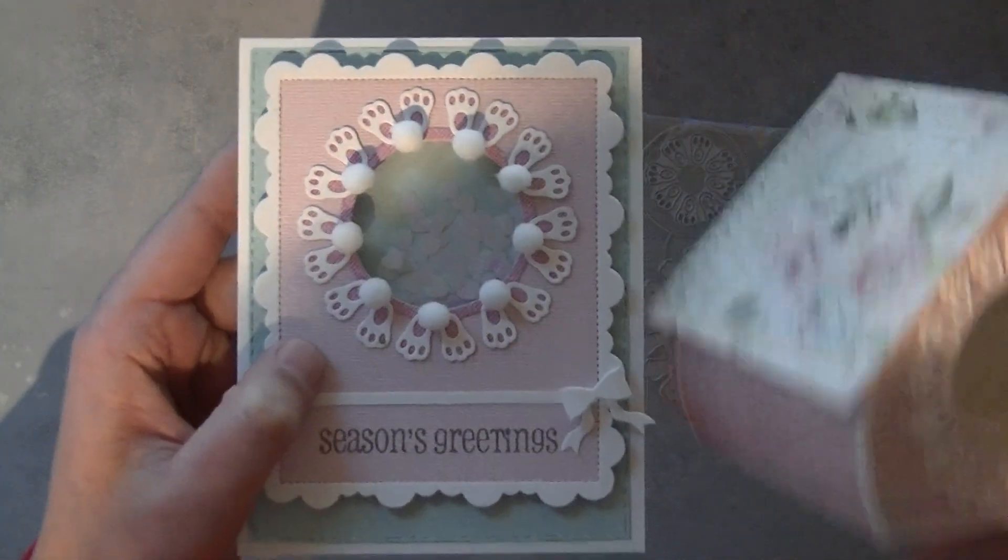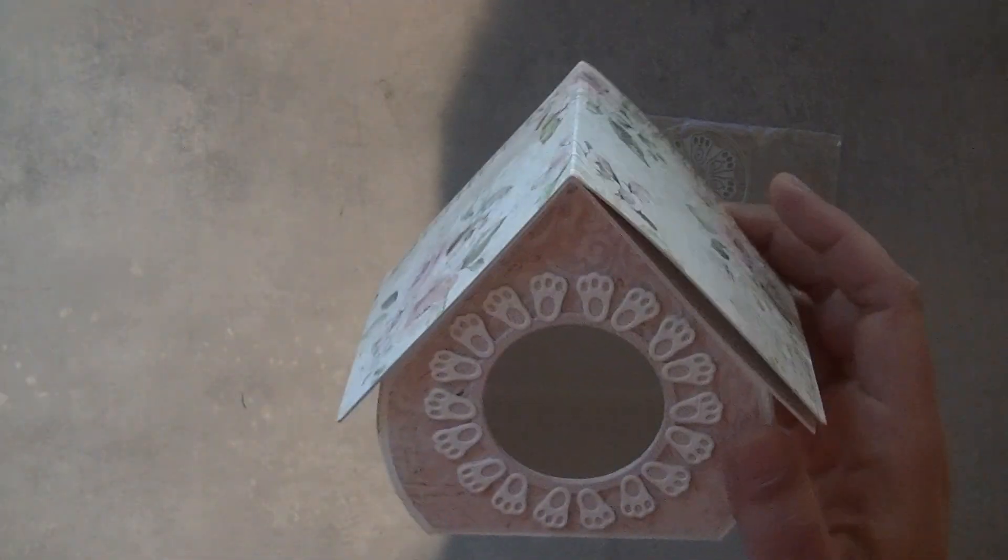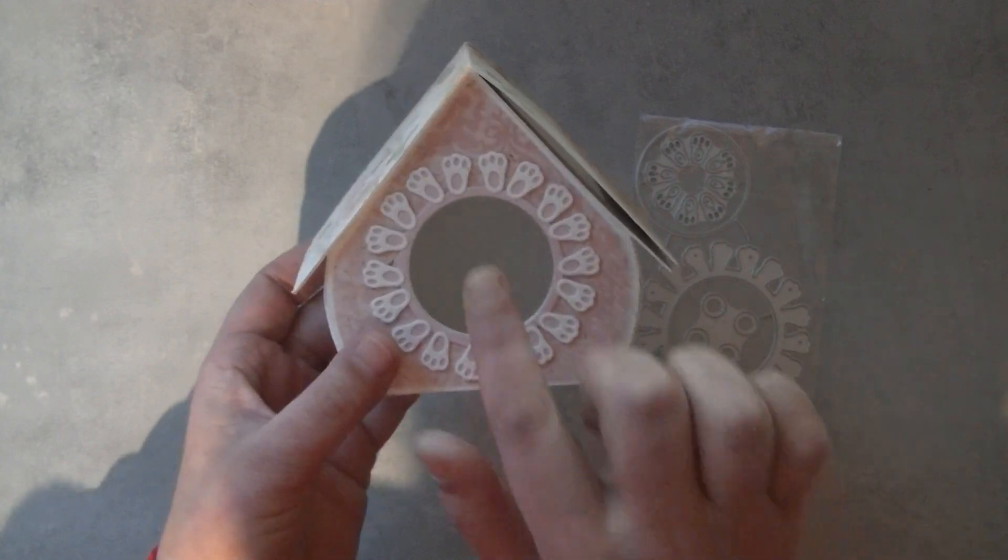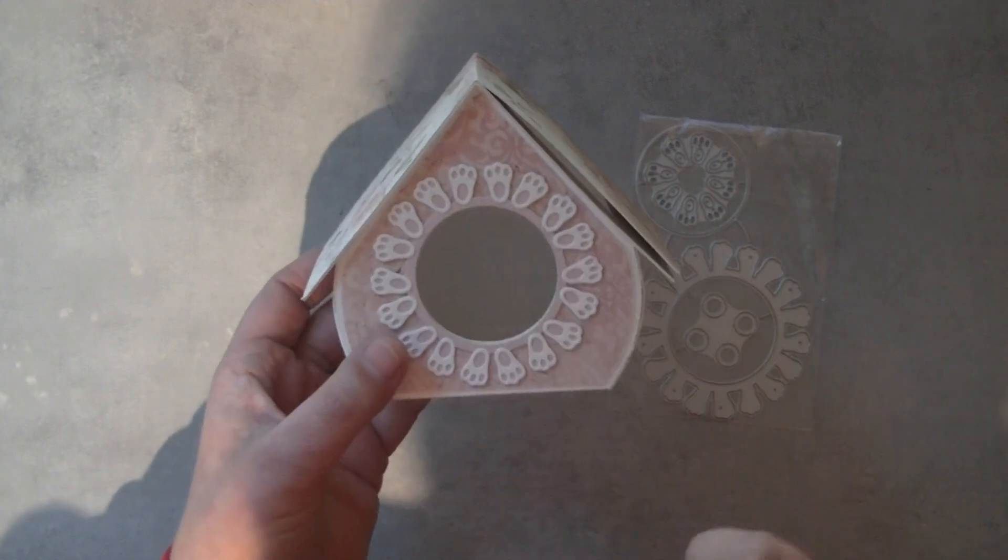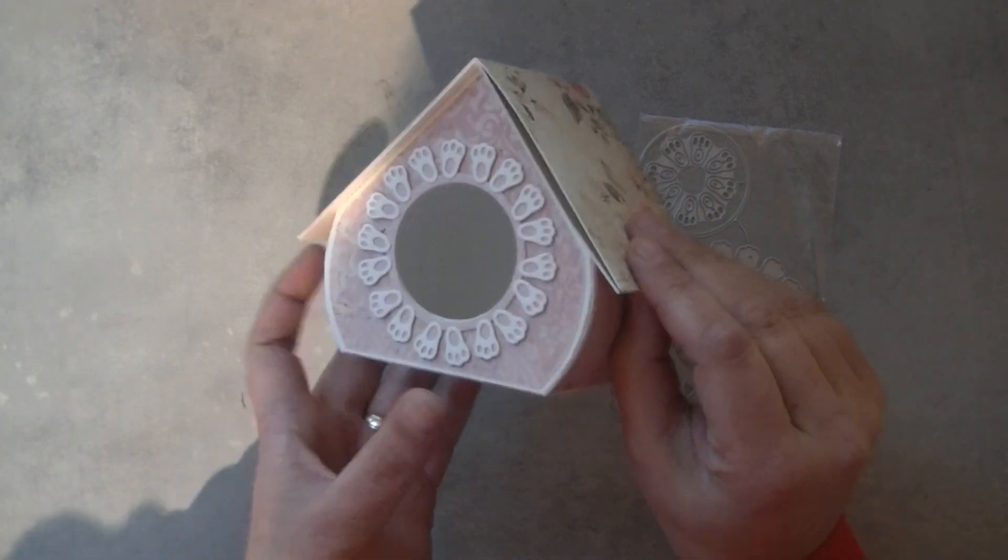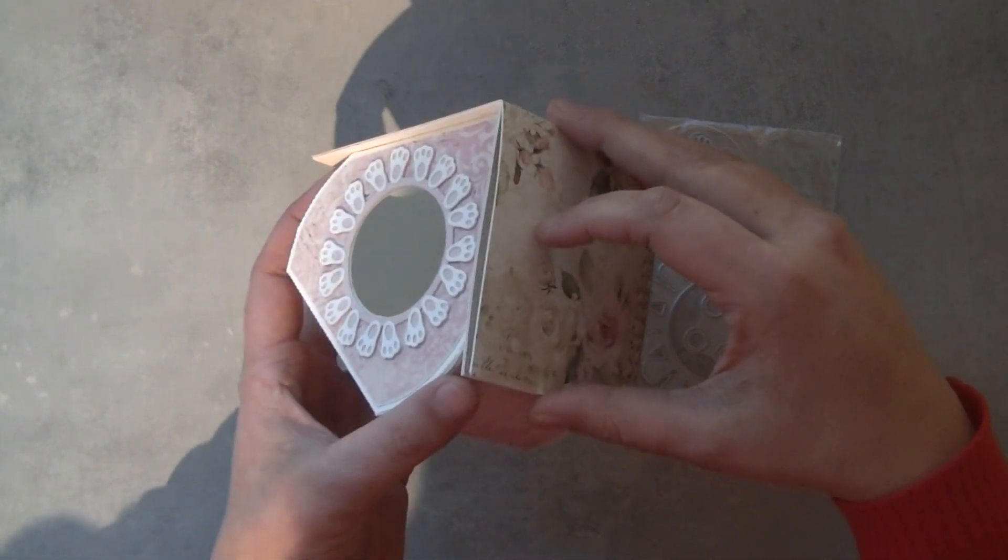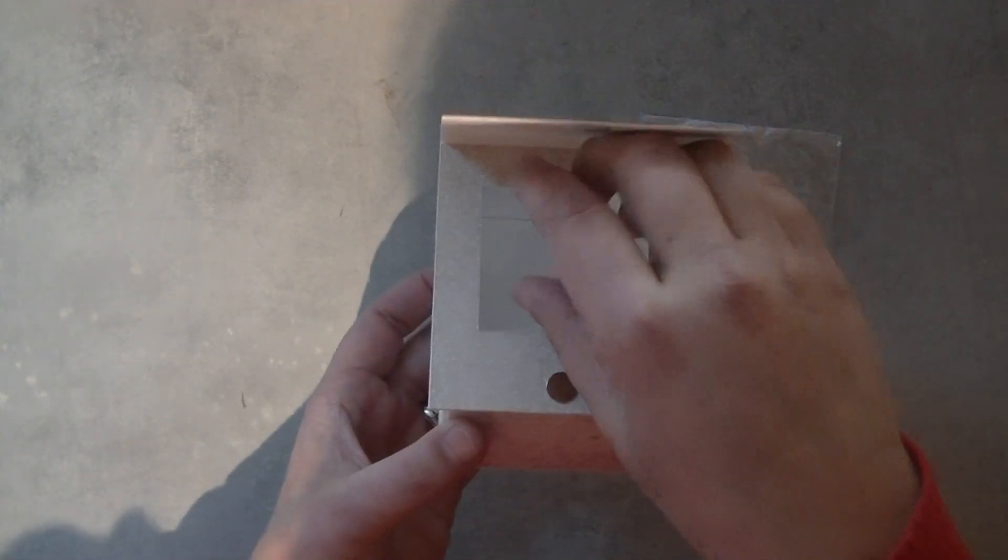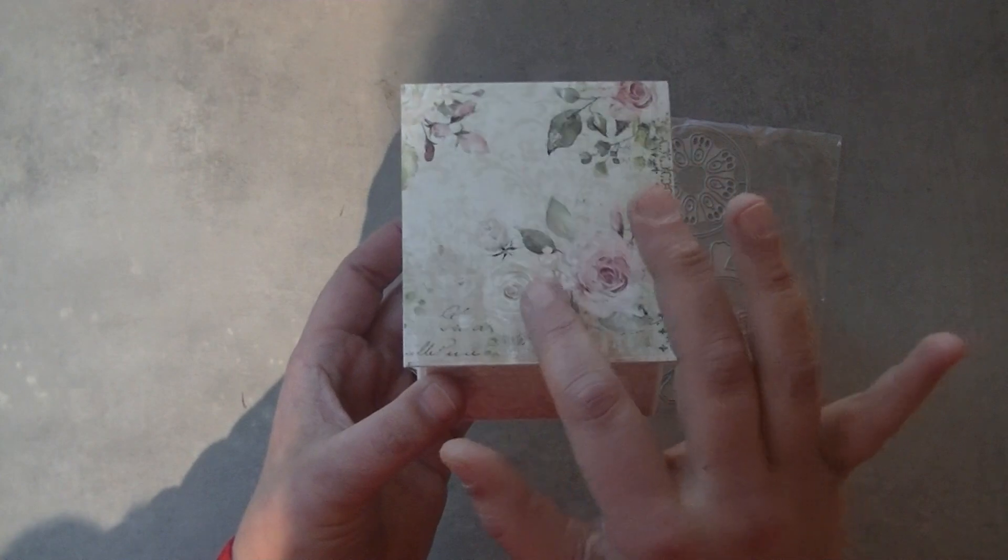I didn't put any acetate in my box, but you could do that and then fill it up with Easter eggs or other candies. I made a lid in it so you could fill it up like this and then close it with some velcro or a magnet just like I did.